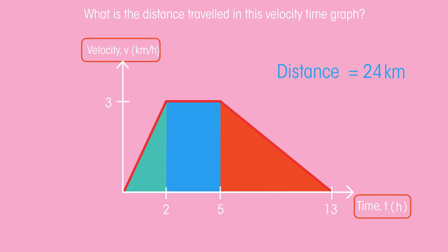So there we have velocity time graphs. Velocity on this axis, time on this axis, and the area underneath the graph is the distance. Simple.